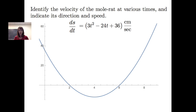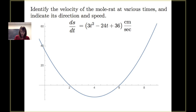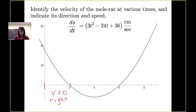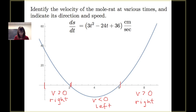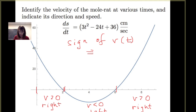Looking at the parabola graph, between t equals zero and t equals two the velocity is positive — the mole rat was moving to the right. Between t equals two and t equals six, the velocity is negative — the mole rat moved to the left. After t equals six, velocity is positive again and the mole rat moves back to the right. The sign of the velocity tells us direction; the absolute value tells us speed.